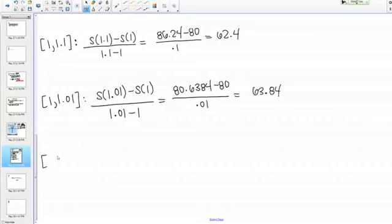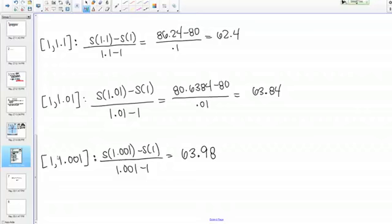Last one: [1, 1.001], a really tiny interval now, really tight around t = 1. For the sake of time, I'm just going to write the final number: 63.98.